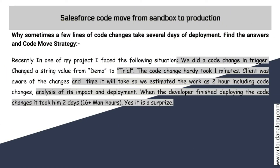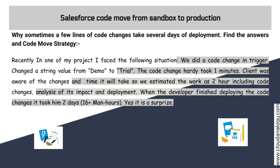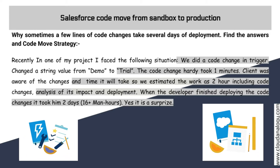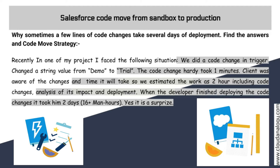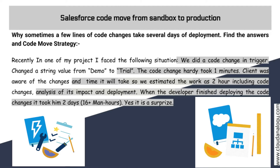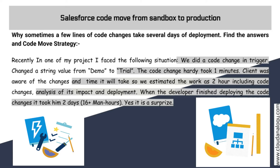Recently in one of my projects I faced the following situation: we were supposed to do a small change in a trigger — changing a string value from 'demo' to 'trial'. The code change hardly took one minute. The client was aware and we estimated it as a two-hour task, including code changes, impact analysis, and deployment. Amazingly, the developer finished deploying in two days — over 16 man hours — which was a big surprise.